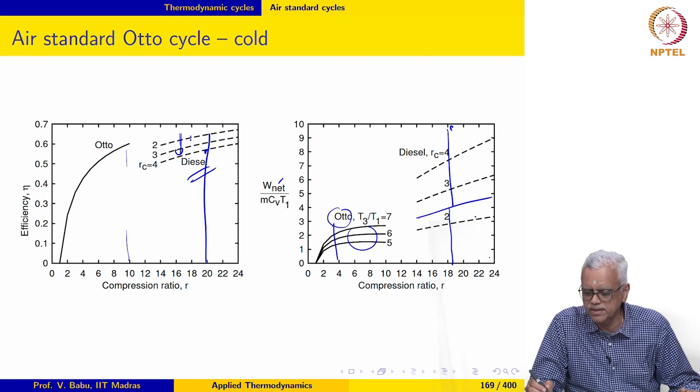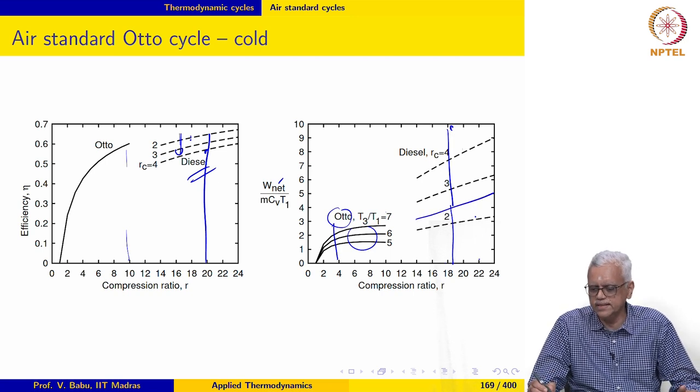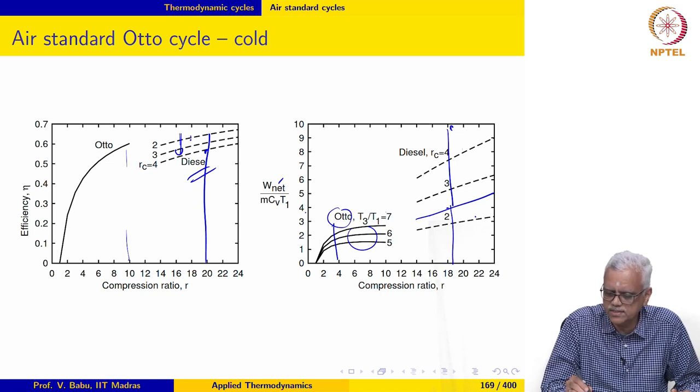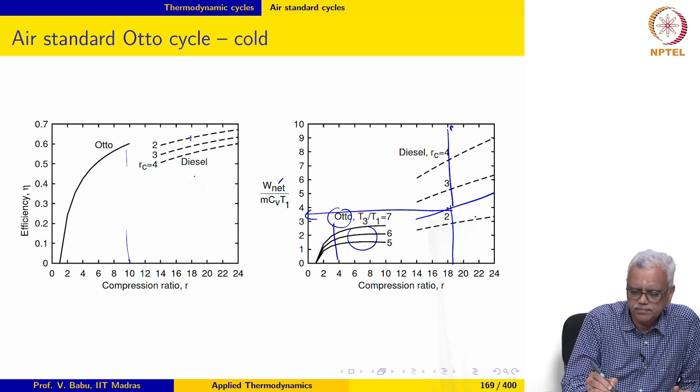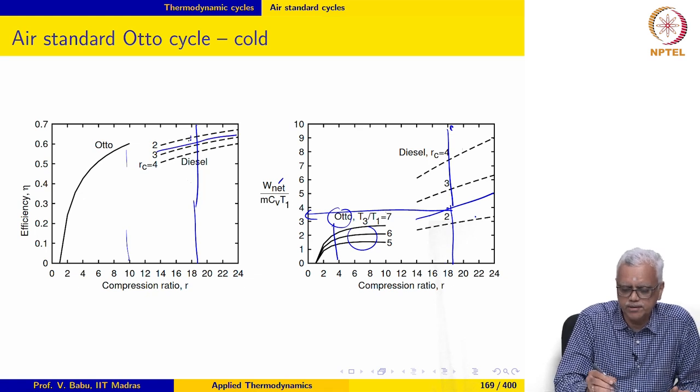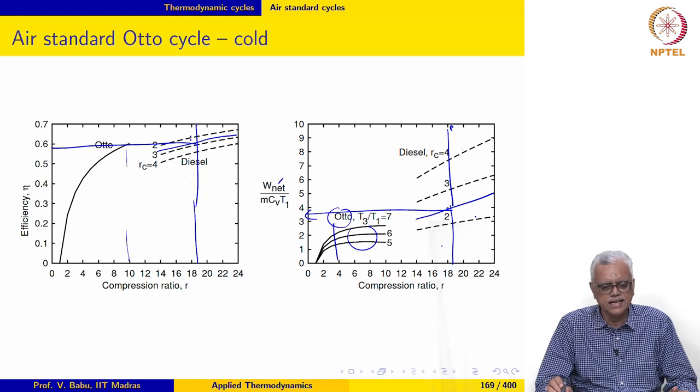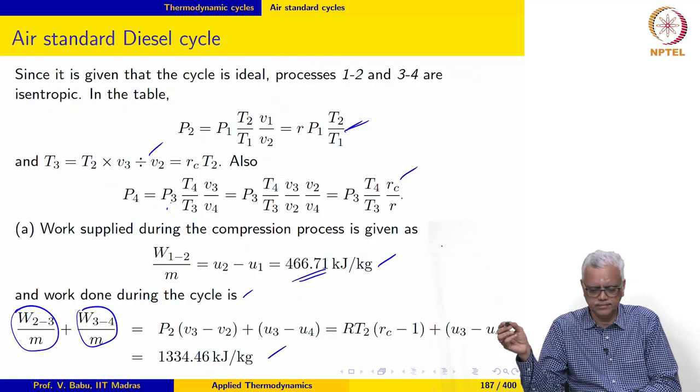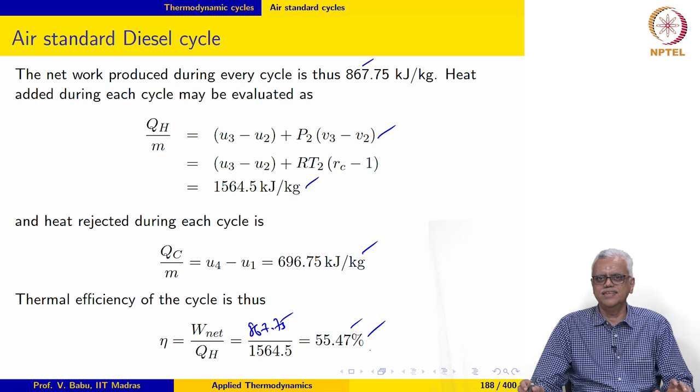18.75 comes out to be somewhere over here, cutoff ratio 2.4283 maybe something like this. The Rc 2.4283 line may be drawn approximately like this. You can see that the thermal efficiency from cold air standard analysis is about 60 percent or so, approximately, and we are getting 55.47. This also shows the power of the cold air standard analysis. The numbers are not that different.